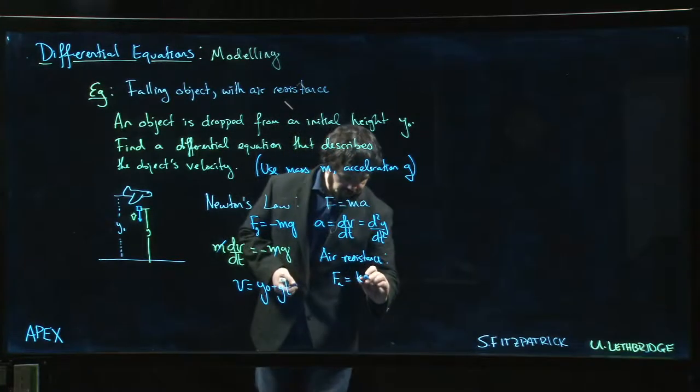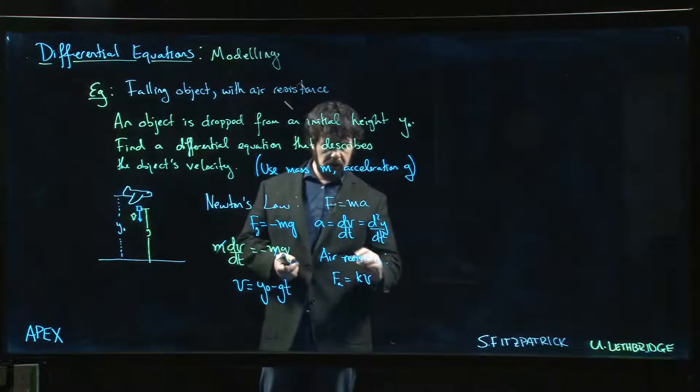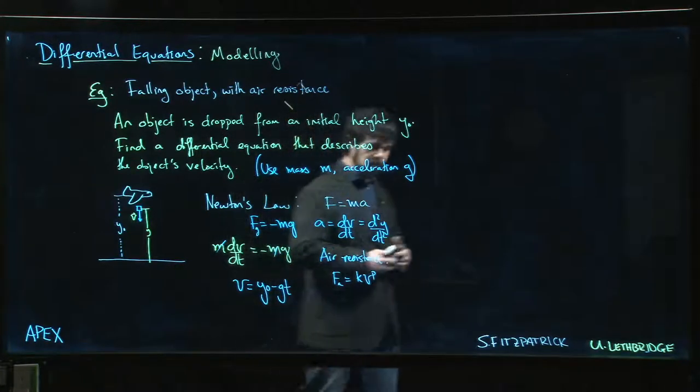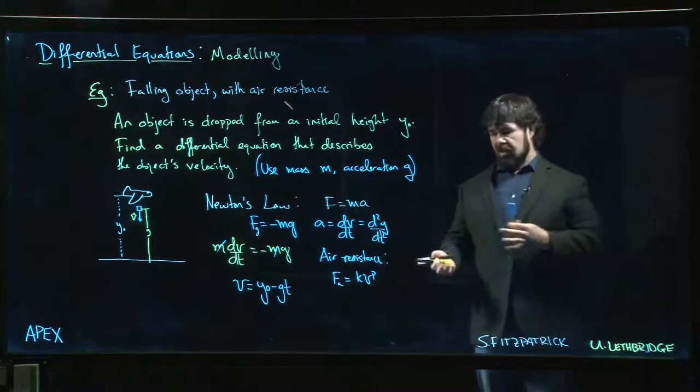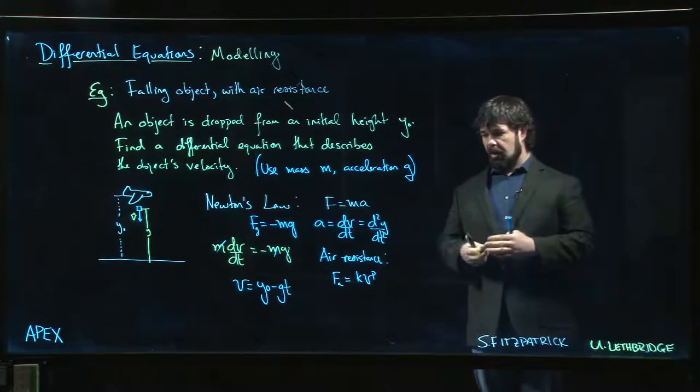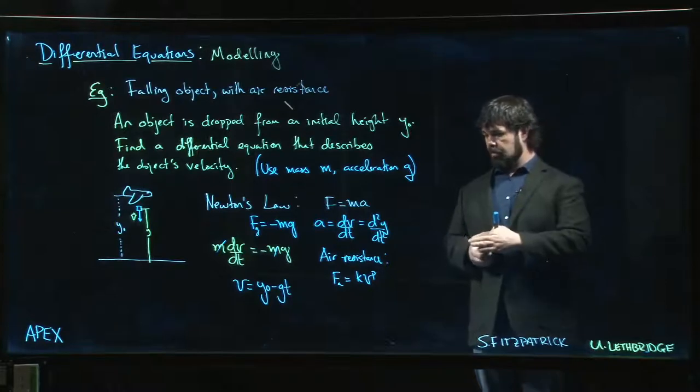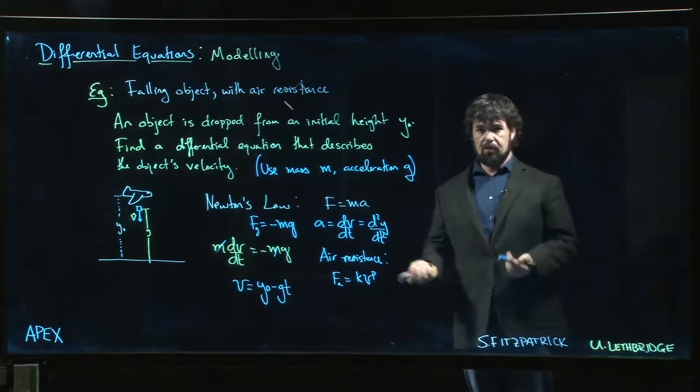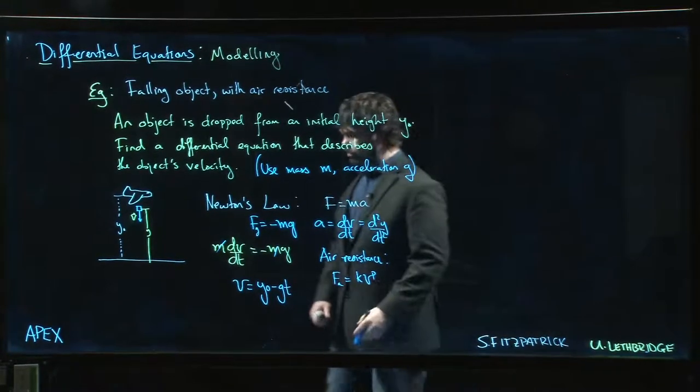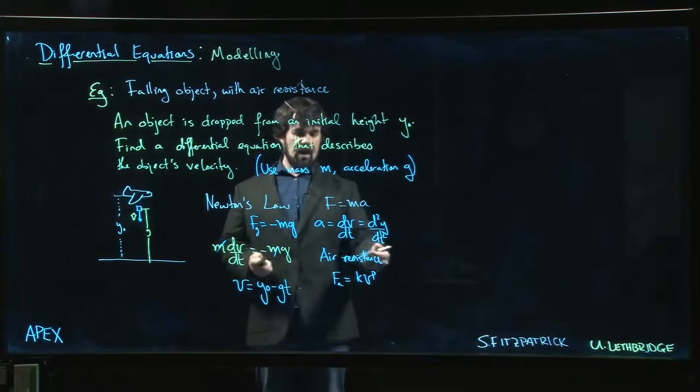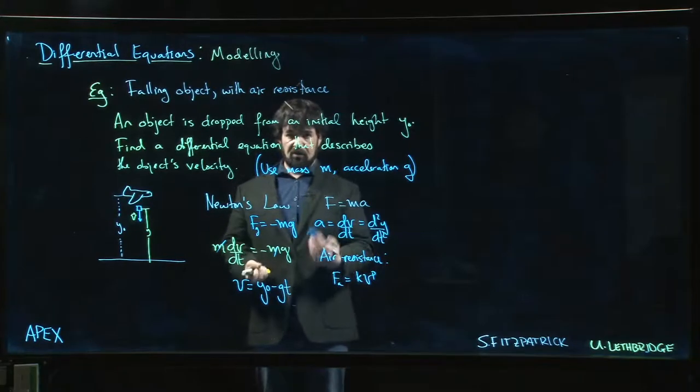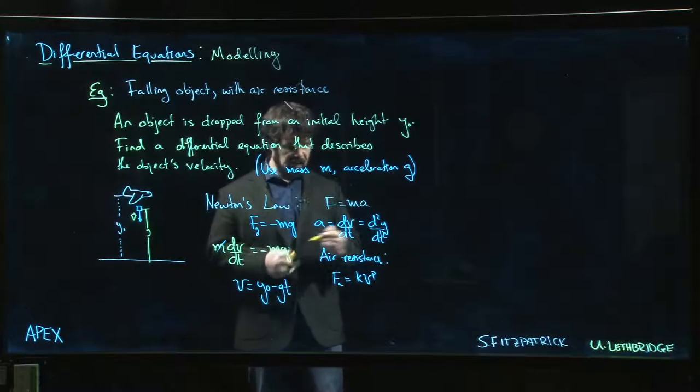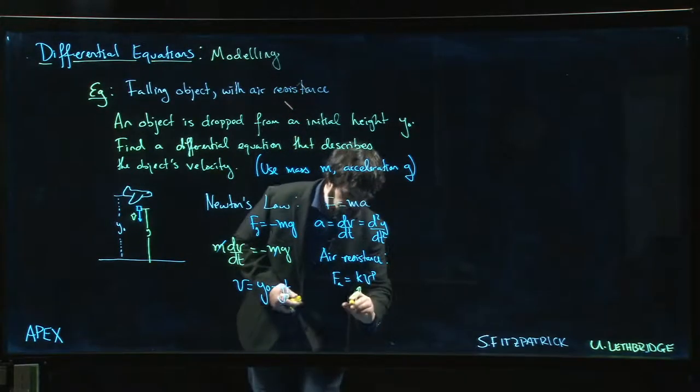In a lot of models there's some power of the velocity that comes in. One way you figure this out is you play around with different models, solve them, figure out what the model predicts for actual velocity as a function of time, then you measure the velocity for some falling object and try to find the right function that works. You do a lot of trial and error to figure out the value of p. This k here is a constant.